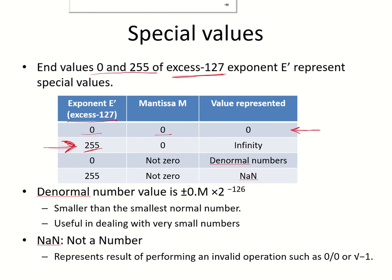To represent very small numbers, smaller than the smallest numbers which are called denormal numbers, this is the representation that is used. The exponent is made zero and the mantissa is a non-zero value.